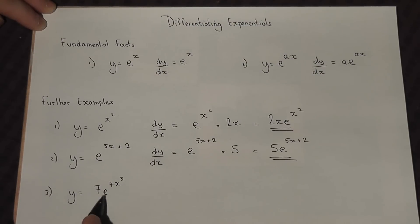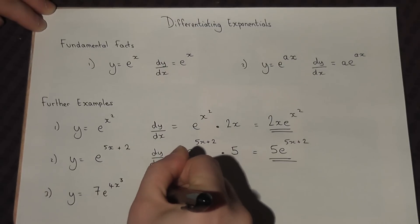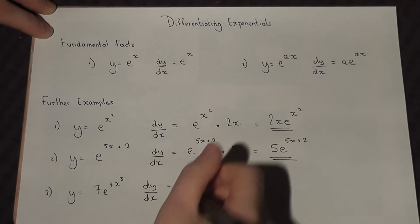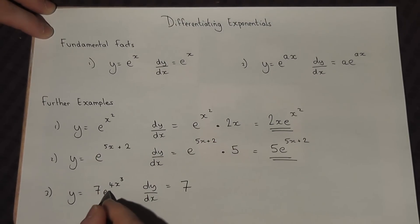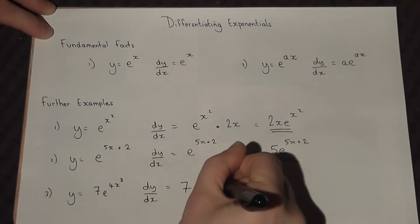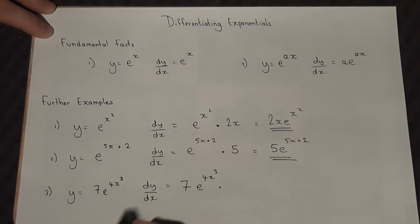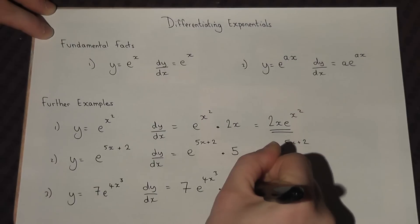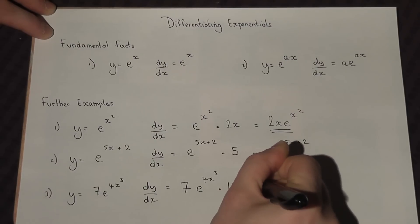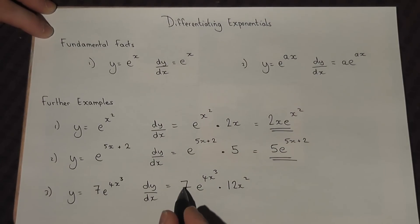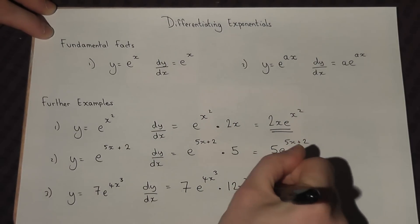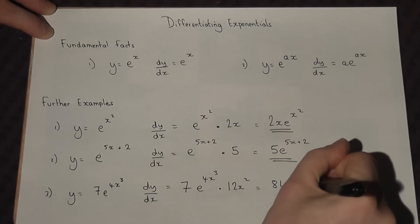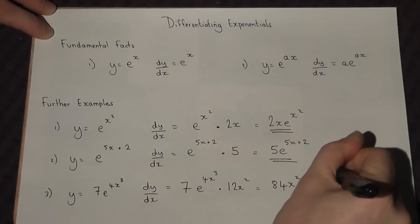On the third example, the 7 is just a constant. E stays the same. We then multiply by 4x cubed differentiated, which is 12x squared. Then we multiply the 7 by the 12x squared, giving 84x squared times e to the power of 4x cubed.